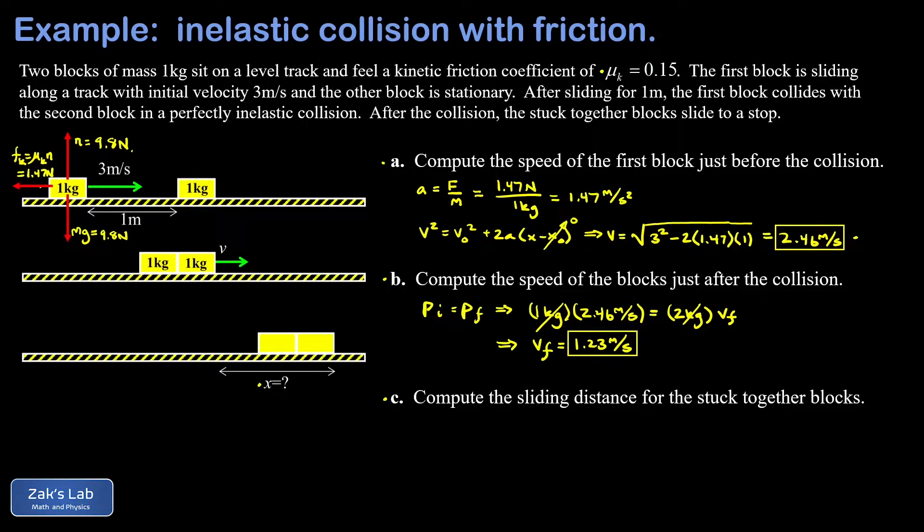Finally, in part C, we want to get the sliding distance for these stuck together blocks after the collision occurs. And this is basically just the reverse of what happened in part A. We know the initial velocity of the stuck together blocks is going to be 1.23 meters per second. We know the final velocity of the stuck together blocks is zero because we're trying to figure out how far they slide before they stop. Well, at the end of the process, V is equal to zero.